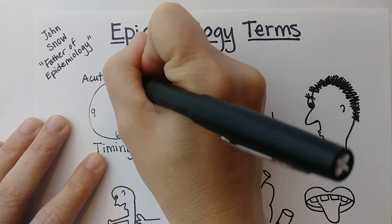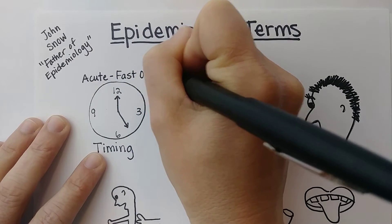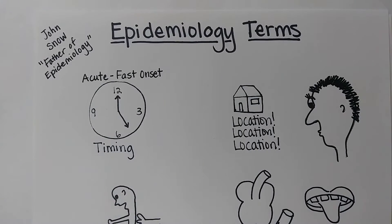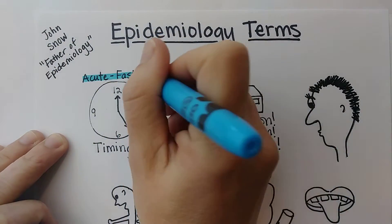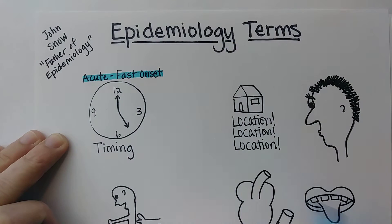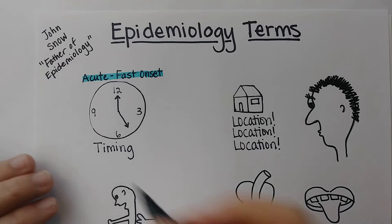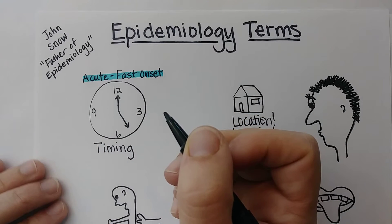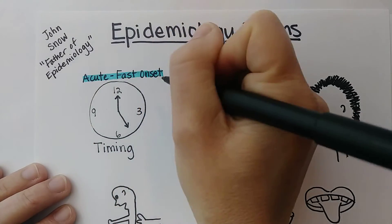Acute can sometimes also mean it has a fast resolution, but not necessarily. For example, someone could get an acute illness that causes their joints to hurt just overnight. We could compare that with a chronic disease, which comes on over time and lasts for a long time.